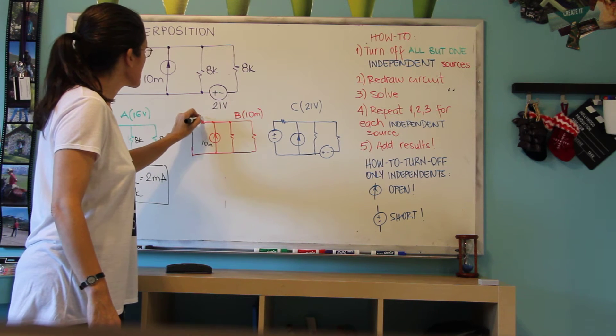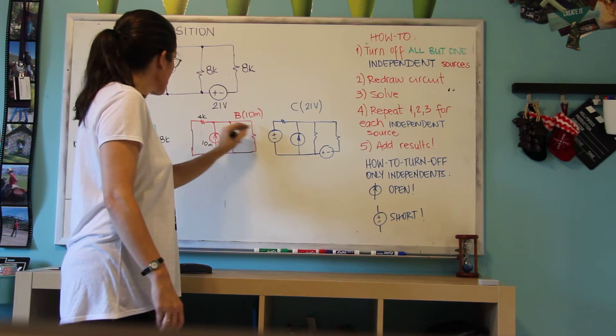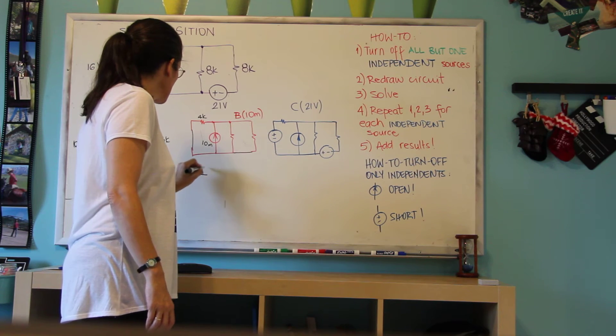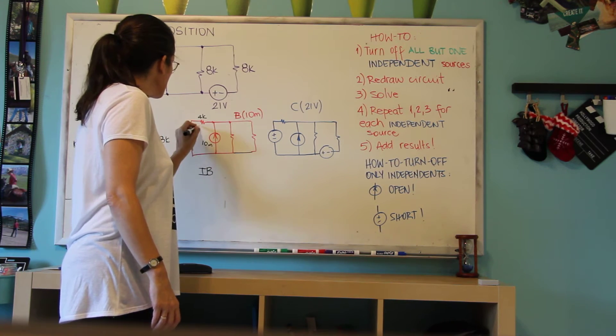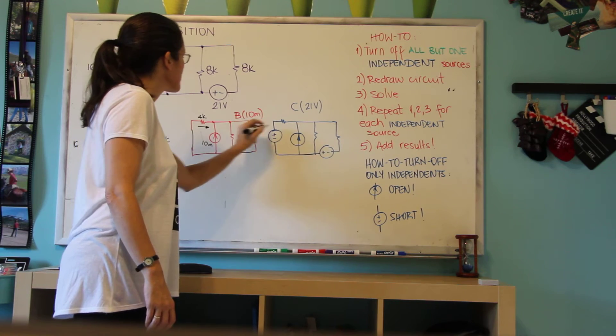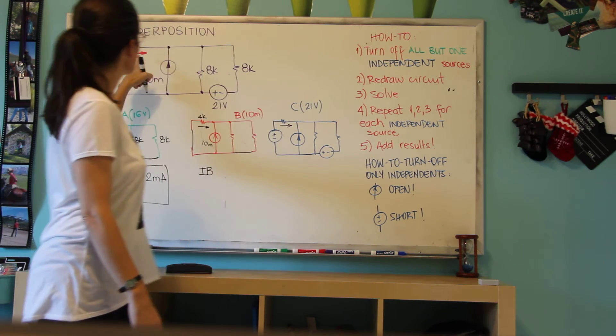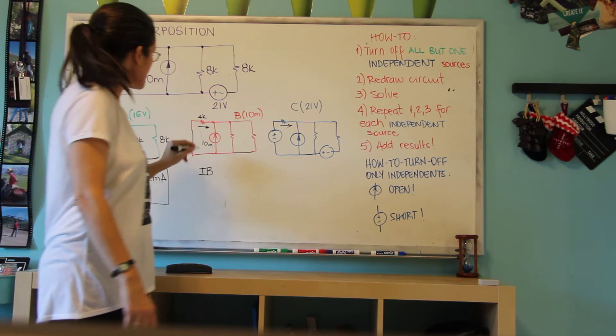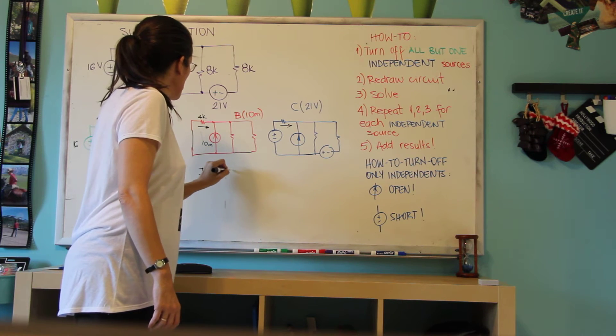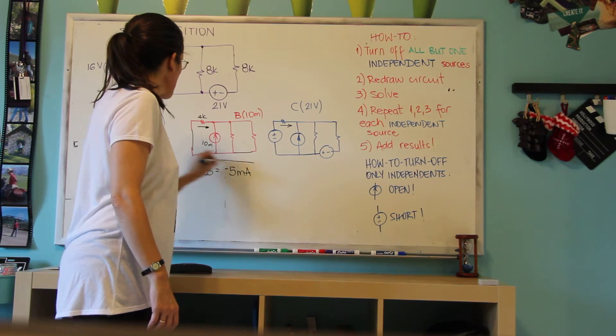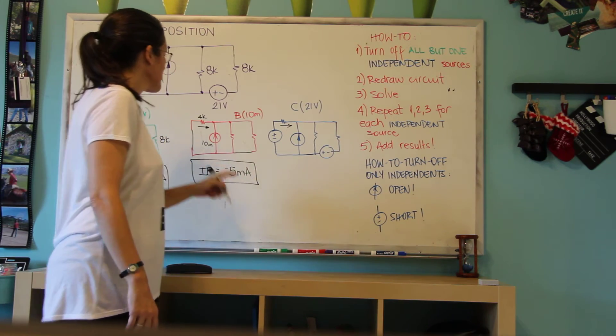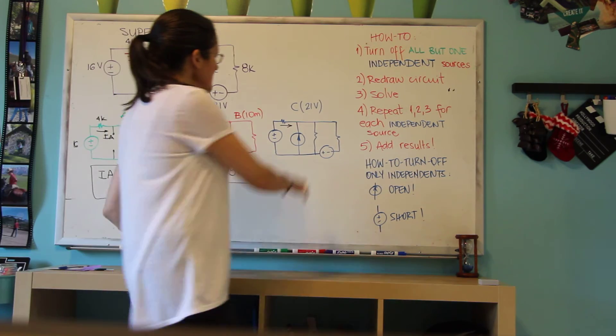This is 4K, and the sum of these two is, these are in parallel. So my current IB, notice I'm drawing the same direction as this circuit, my IB will be minus 5 milliamps by current division.